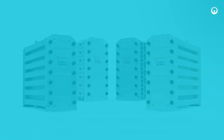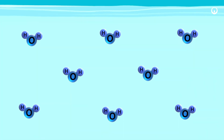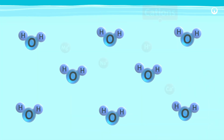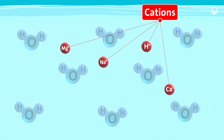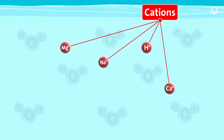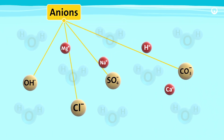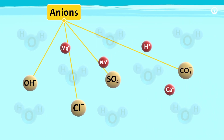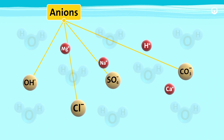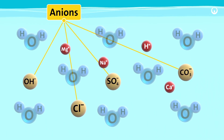The ordinary water molecule is neutral, but it does exist in equilibrium with cations, which are positively charged ions like hydrogen, sodium, calcium, and magnesium, along with anions, which are negatively charged ions like hydroxide, chloride, bicarbonate, and sulfate.